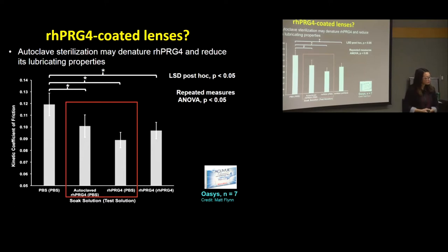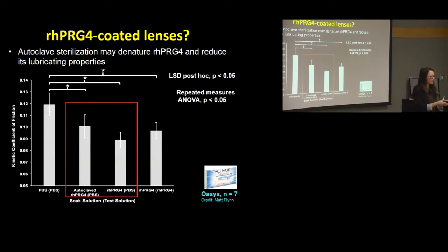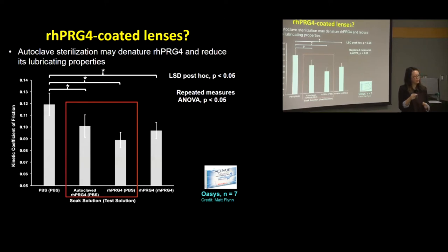Audience suggestion: Could you add PRG4 to the blister pack solution after autoclaving for shipment, so daily lenses arrive pre-soaked? Amanda: The autoclave is actually the last step in the manufacturing process — the lenses are already inside the singular blister packages when autoclaved — so adding PRG4 post-autoclave to the blister pack would mean it gets sterilized along with the lens.